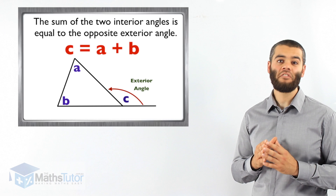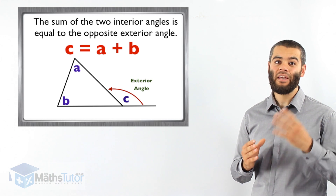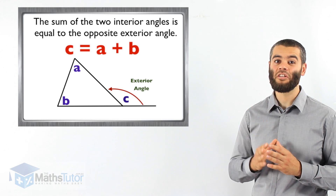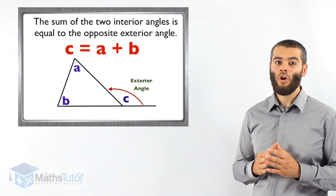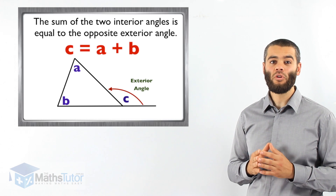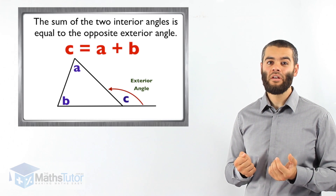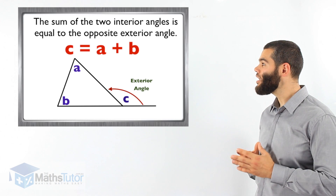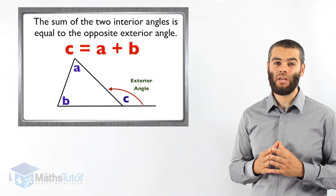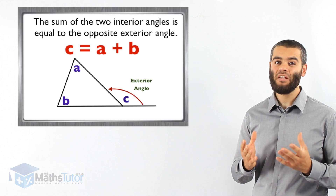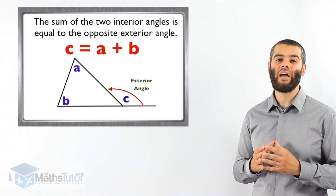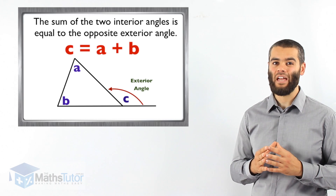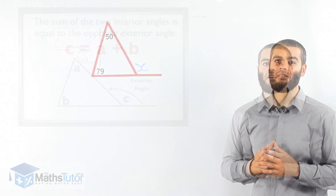Remember this concept — you're going to be using it in later years to find missing angles using this exterior angle. Now we're going to do two or three examples to show you how easy it is following this rule: C equals A plus B, meaning the two interior angles added together equal the exterior angle outside.